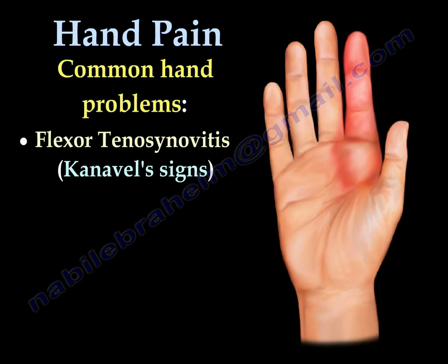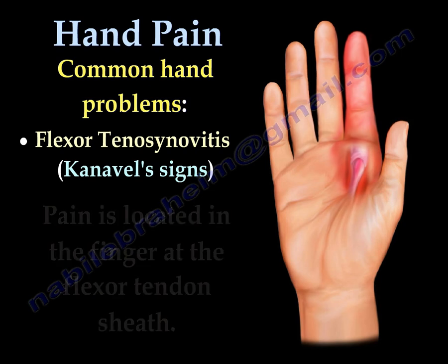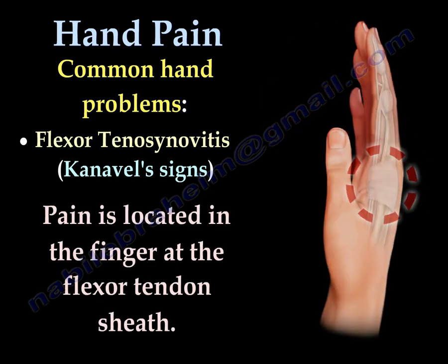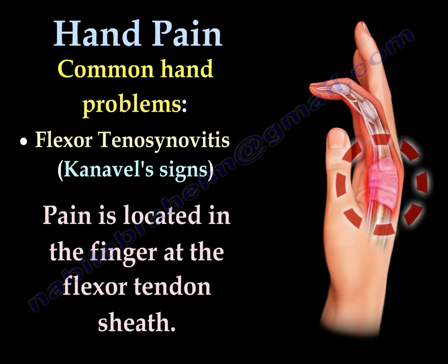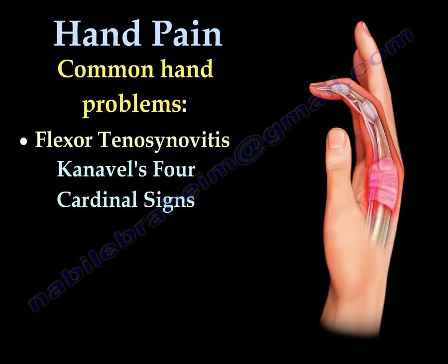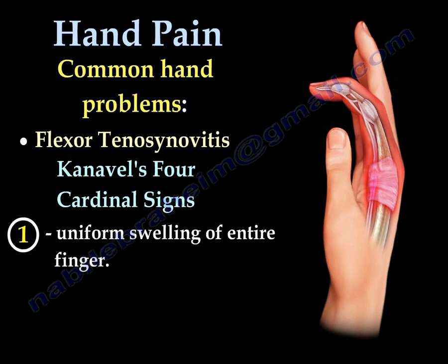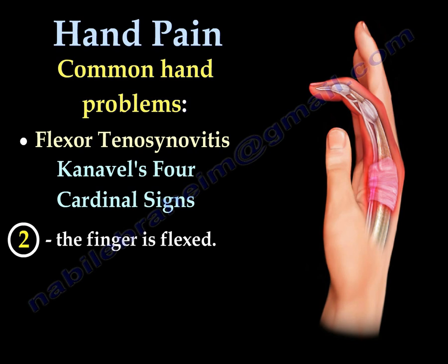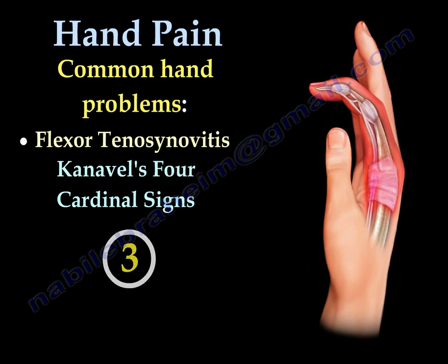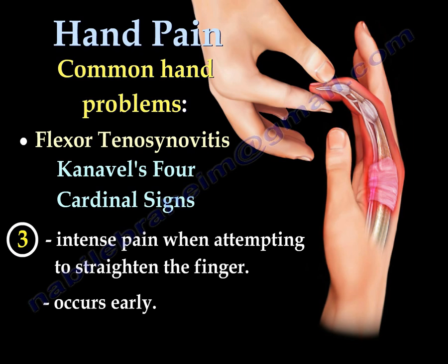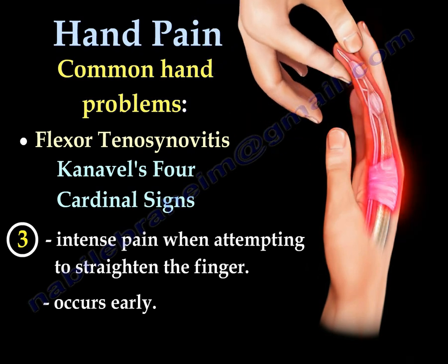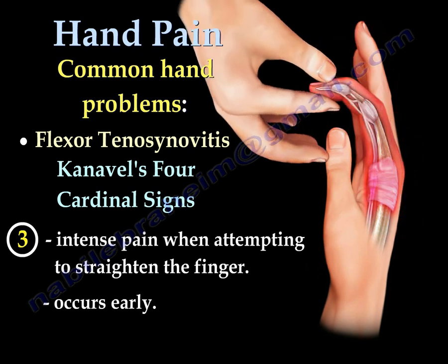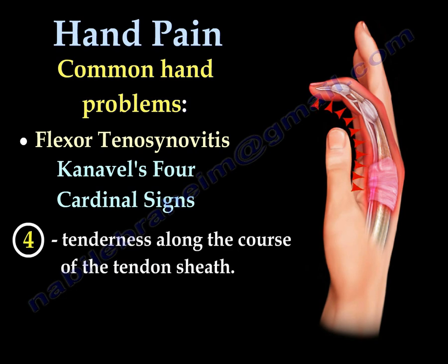Pain located in the finger at the flexor tendon sheath is assessed using the Kanavel signs. The four Kanavel signs are: 1. Uniform swelling of the entire finger; 2. The finger is held in flexion; 3. Intense pain when attempting to straighten the finger, occurring early and very specific; and 4. Tenderness along the course of the tendon sheath.